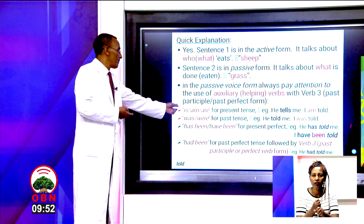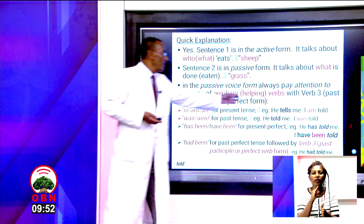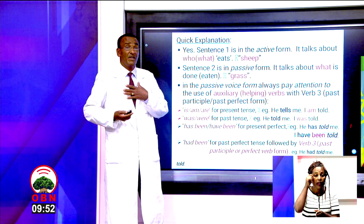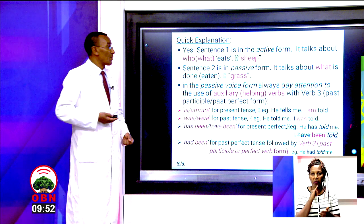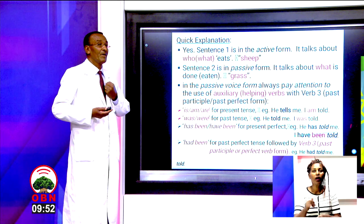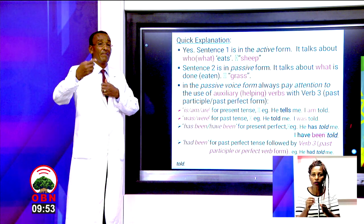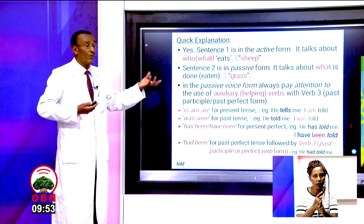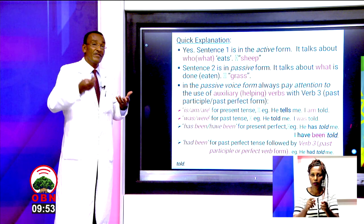For example, 'he tells me' — there is no am, is, or are here. But in the passive form, 'I am told' — there is 'am'. Without am, is, are, was, were, has been, or had been, we can't make passive sentences.